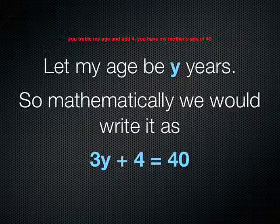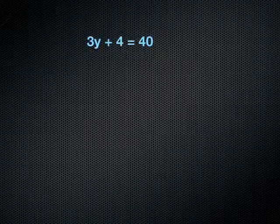So working through those equations as we've done before, getting the letters on one side of the equal sign and the numbers on the other, we will start off with 3y plus 4 equals 40. We will need to take the plus 4 from the left-hand side, from the y terms, over to the 40, and that plus 4 will become minus 4.